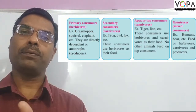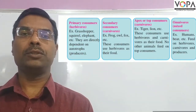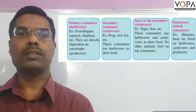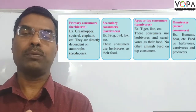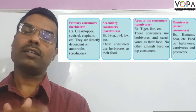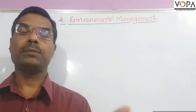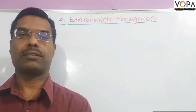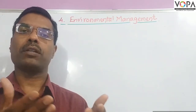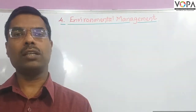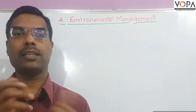Consumers depend on producers for food. Primary consumers are the herbivores. Secondary consumers are the carnivores. Apex carnivores or apex consumers are also present in the ecosystem. Herbivores depend for food directly on the producers. Secondary consumers depend for food on primary consumers. Tertiary consumers obtain their food from primary and secondary consumers.